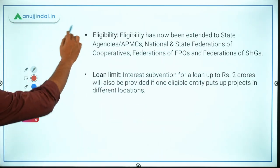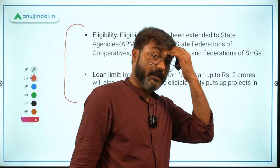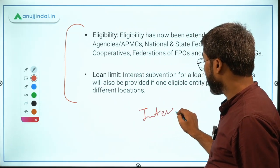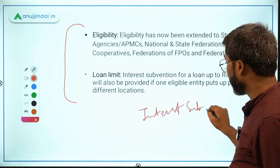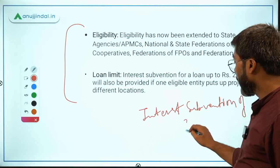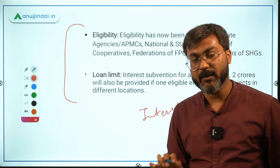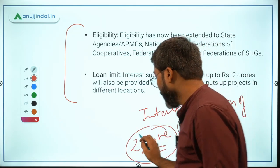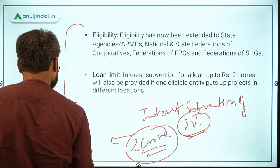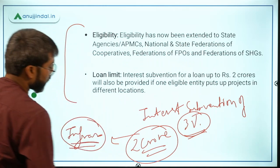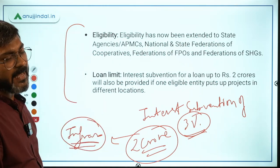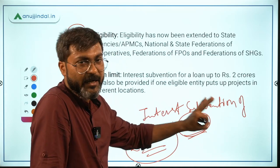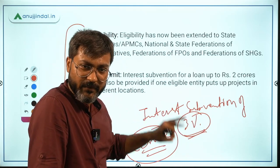Under the Agriculture Infrastructure Fund, interest subvention of up to 3% is provided by the government on loans up to ₹2 crores for infrastructure building in agriculture. This is the core benefit of the fund.